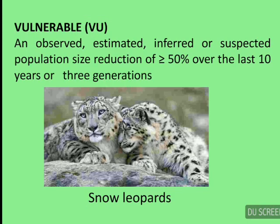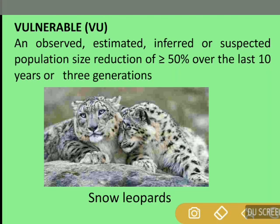Next is Vulnerable, i.e. VU. An observed, estimated, inferred, or suspected population size reduction of either 50% or more than 50% over the last 10 years or 3 generations. An example here is snow leopards.